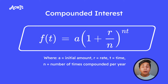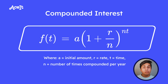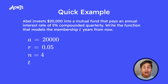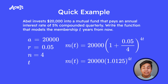Building on the last few topics, we have compound interest. This is exponential growth that gets compounded more than one time. To account for that, we now have an n, which is the number of times the rate is compounded per year. The equation is f(t) = a times (1 + r/n) to the power of n times t. For example, Abel invests $20,000 into a mutual fund that pays an annual interest rate of 5% compounded quarterly. A is 20,000, r is 0.05, and since it's compounded quarterly, n is 4. Plugging it in, we get 20,000 times 1.0125 to the power of 4t.